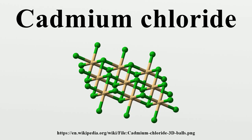Cadmium chloride is a white crystalline compound of cadmium and chlorine, with the formula CdCl2. It is a hygroscopic solid that is highly soluble in water and slightly soluble in alcohol. Although it is considered to be ionic, it has considerable covalent character to its bonding.